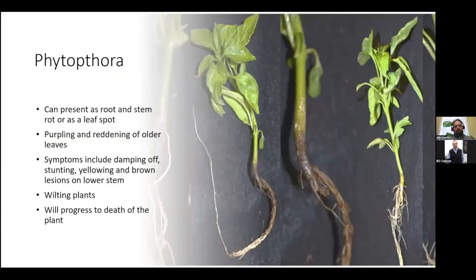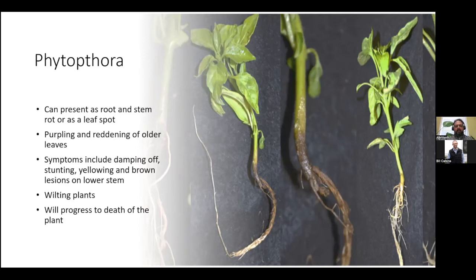Phytophthora is another one commonly seen within foliage plants, just like in bedding plants. It can present itself as either a root or stem rot, and even a leaf spot. You'll typically see purpling or reddening of older leaves. The symptoms will include damping off, stunting, yellowing, and browning lesions on the lower stem. As the disease develops, you'll typically get wilting plants, especially once the plants are under a stress condition — you may have plants that look great in the morning, but as it gets hotter in the greenhouse during the day, they start to wilt.